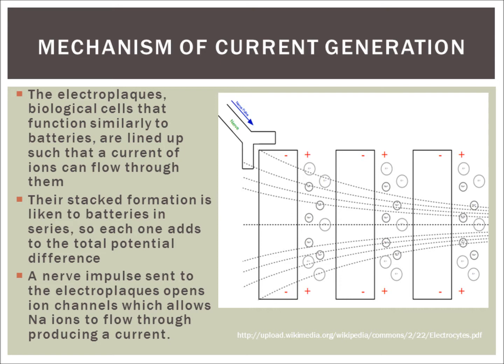A nerve impulse is eventually sent to these electroplaques, which opens up the ion channels and then allows for sodium ions to flow through. And as you remember from class, current is defined as a movement of positive charge. So if sodium ions are flowing through from left to right, the current is being produced from left to right.